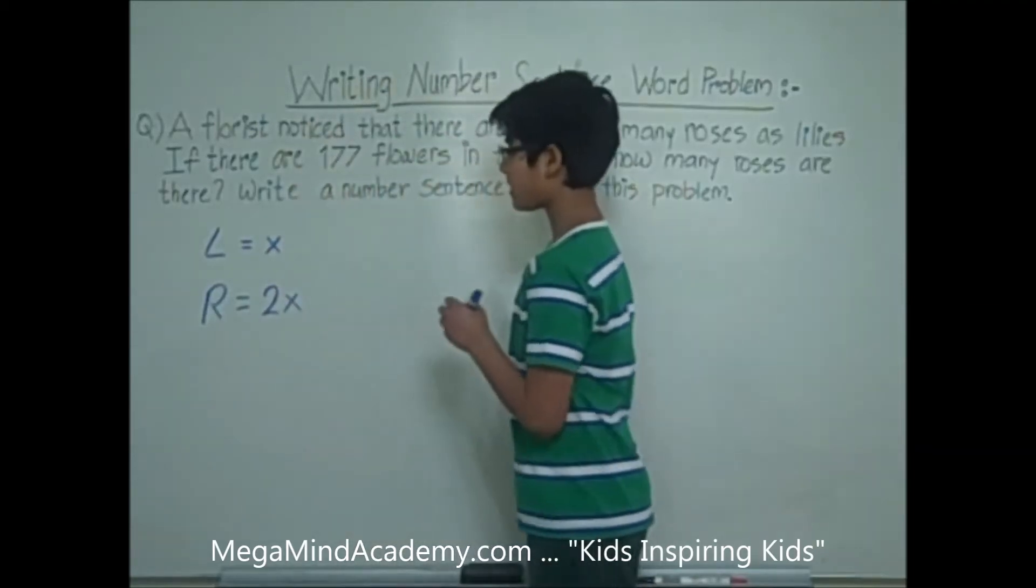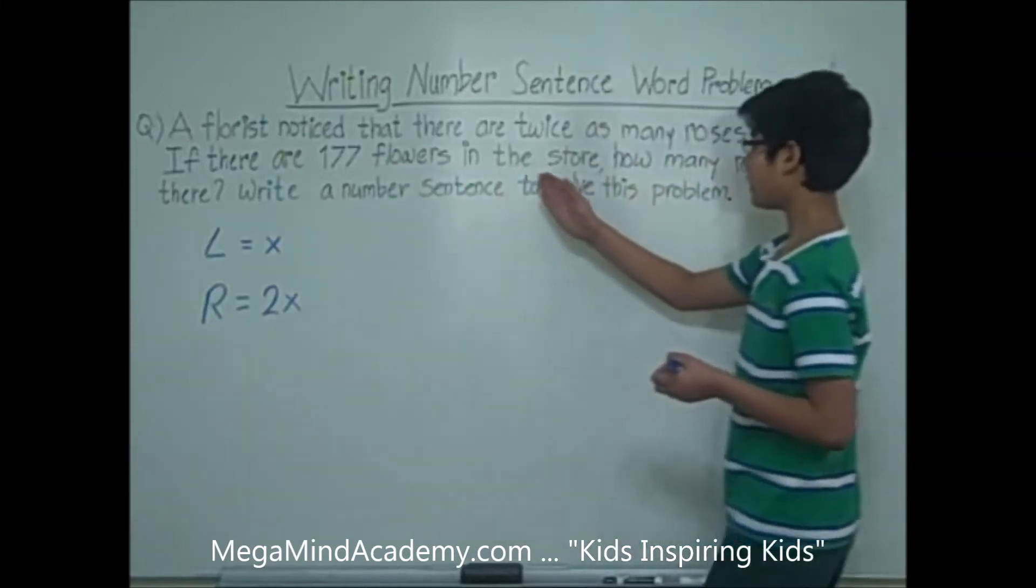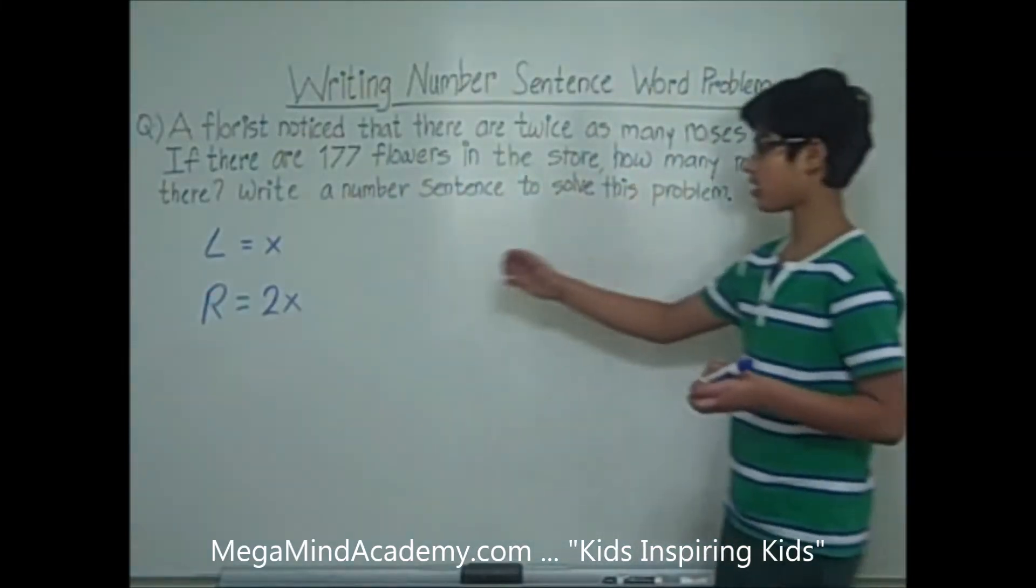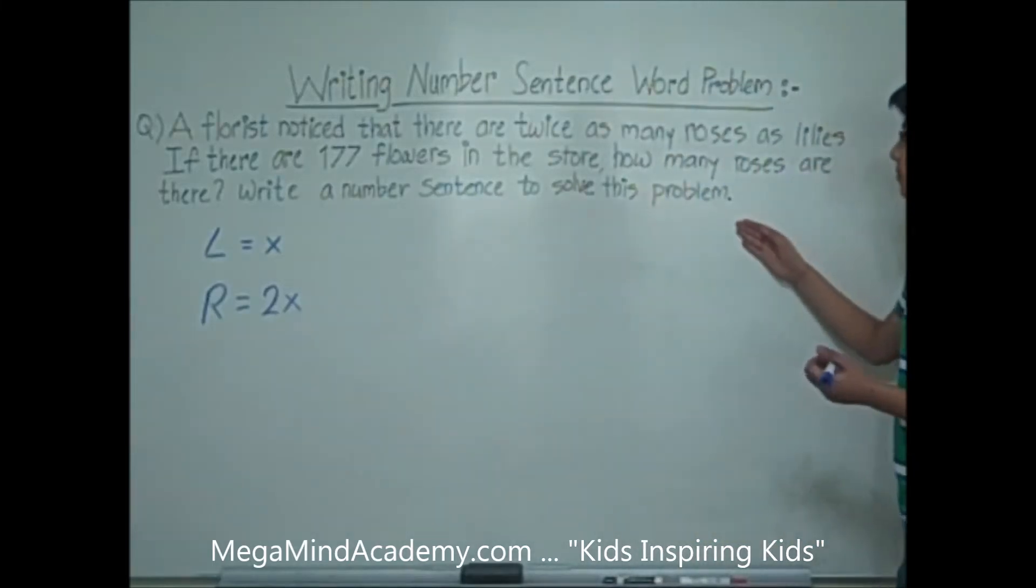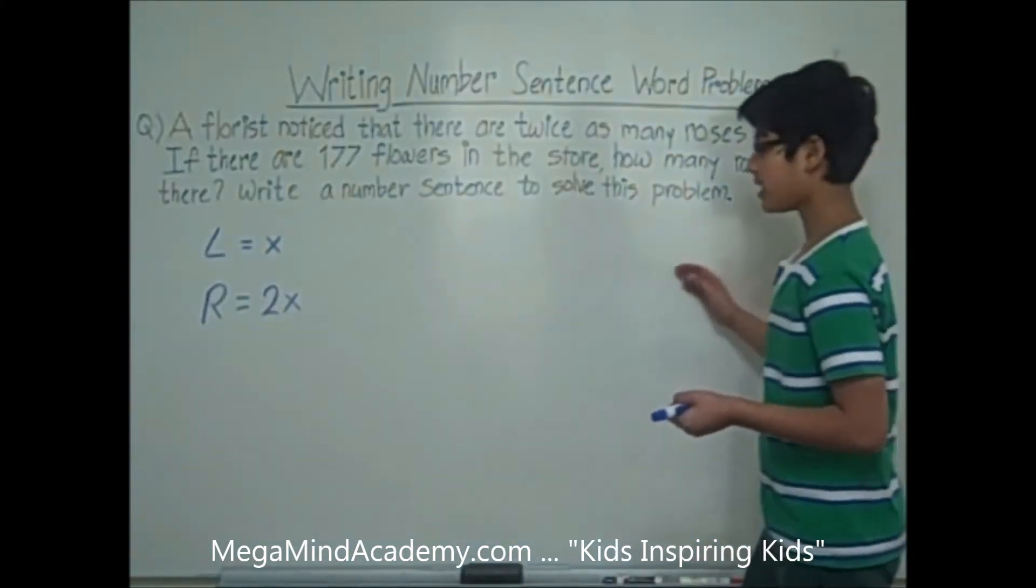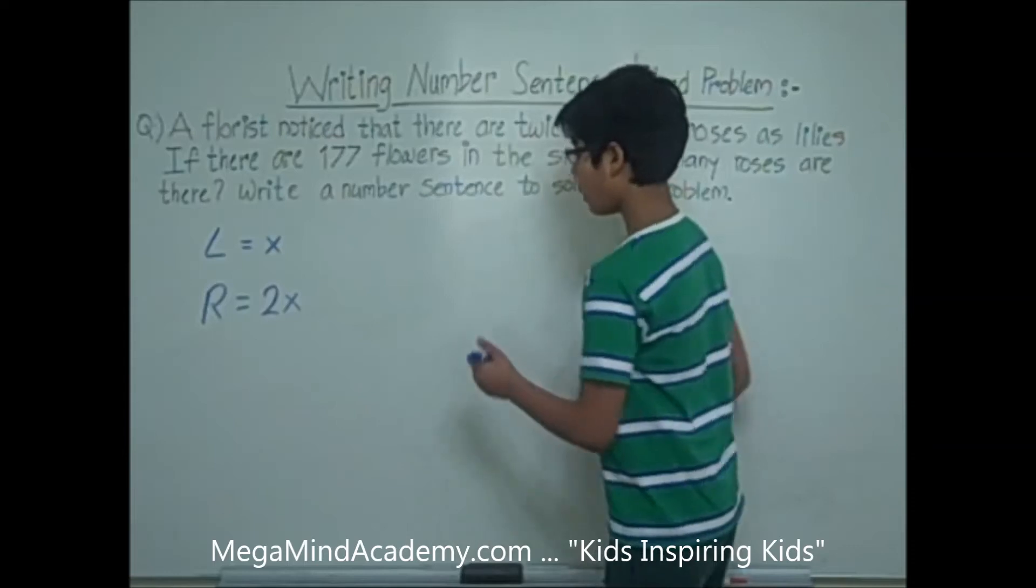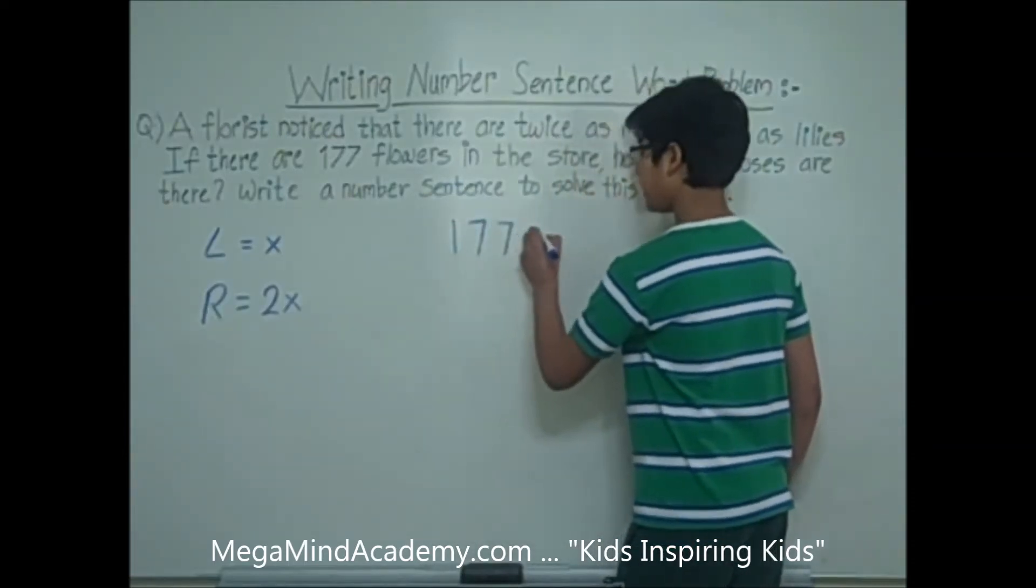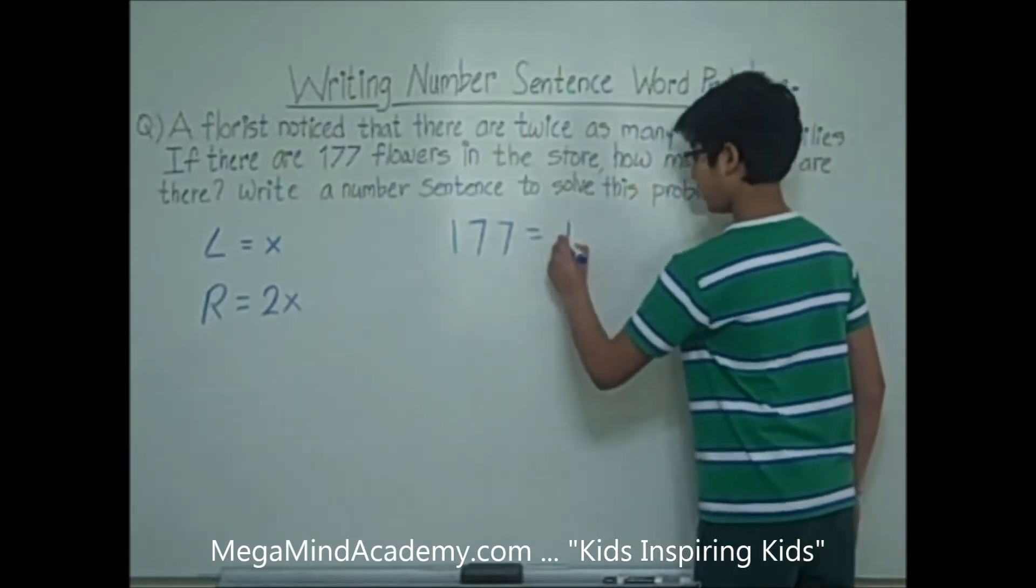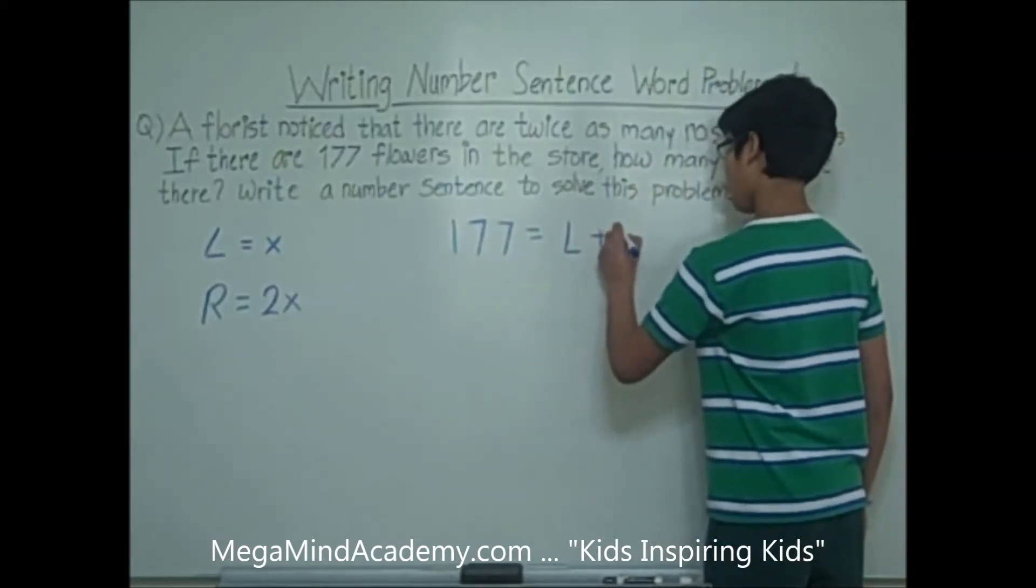Now, it says that there are 177 flowers in the store. How many roses are there? Write a number sentence to solve this problem. So, this means that 177 flowers equals lilies plus roses.